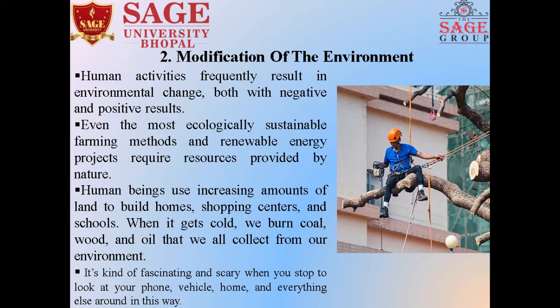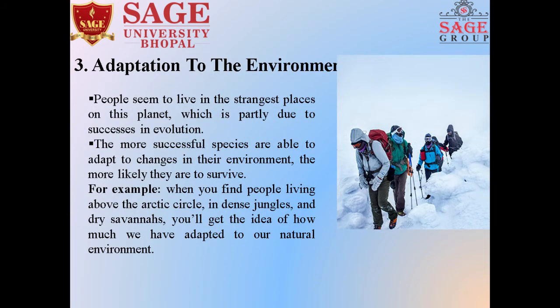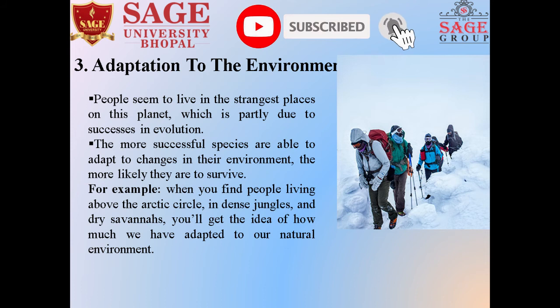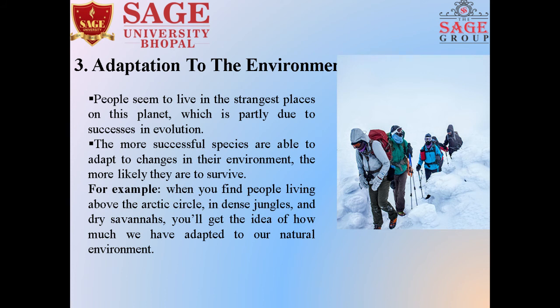Third, adaptations to the environment. People seem to live in the strangest places on this planet, which is partly due to success in adaptation and evolution. The most important point is that the more successful organisms and communities are able to adapt to changes in their environment, the more likely they are to survive. For example, when you find people living above the Arctic Circle, in dense jungles, and dry savannas, you get an idea of how much we have adapted to the natural environment. So adaptations to the environment are very important.